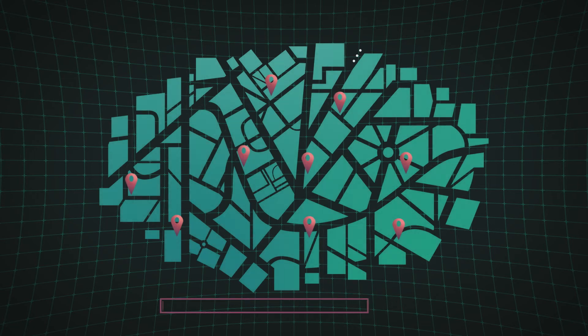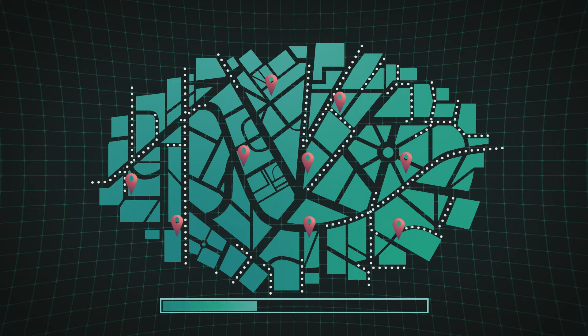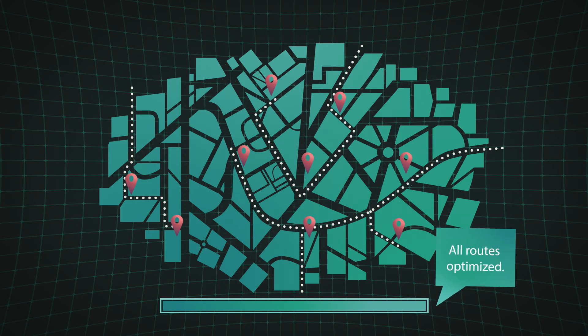A conventional computer would recalculate all the possible routes for each vehicle in succession. A quantum computer, in contrast, could optimize all the potential alternatives for each vehicle dependent on the other vehicles and find the ideal route for the entire fleet.